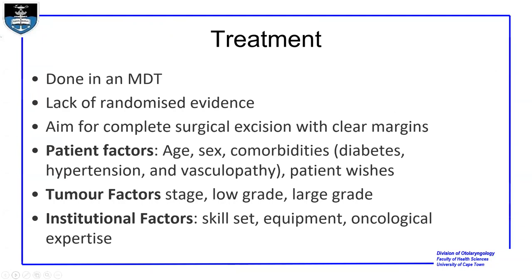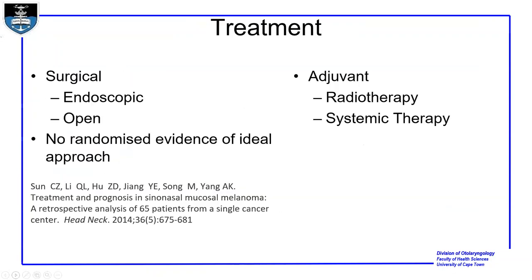Treatment is managed by a multidisciplinary team. There is a lack of randomized evidence for best practice, but there is agreement that one should aim for complete surgical excision with clear margins. When treating these tumors, one looks at patient factors, tumor factors, stage, grade, and institutional factors including skill set, equipment, and oncological and surgical expertise. Surgical treatment can be either endoscopic — the main treatment at most centers today — or open. There is no randomized evidence favoring one approach over the other, and the outcome has been found to be the same whether endoscopic or open.